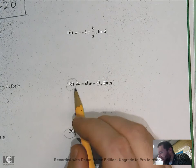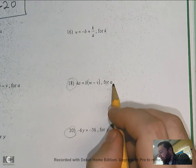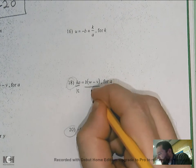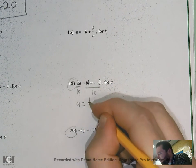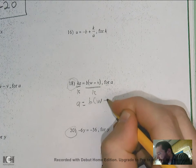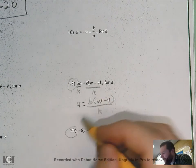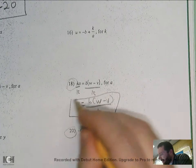Number 18, k times a. And I want to solve for a. So they're multiplying. So I have to divide by k. And that would give me a is equal to b times (w minus v) over k. And that's it. A is by itself. I'm done. It looked a lot more complicated than it was, right?